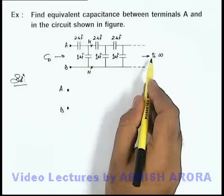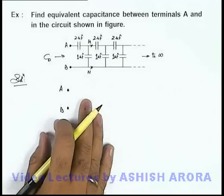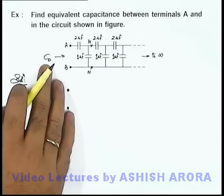Because out of infinite sections if we remove 1 section, still the capacitance beyond points M and N will remain same as C₀.